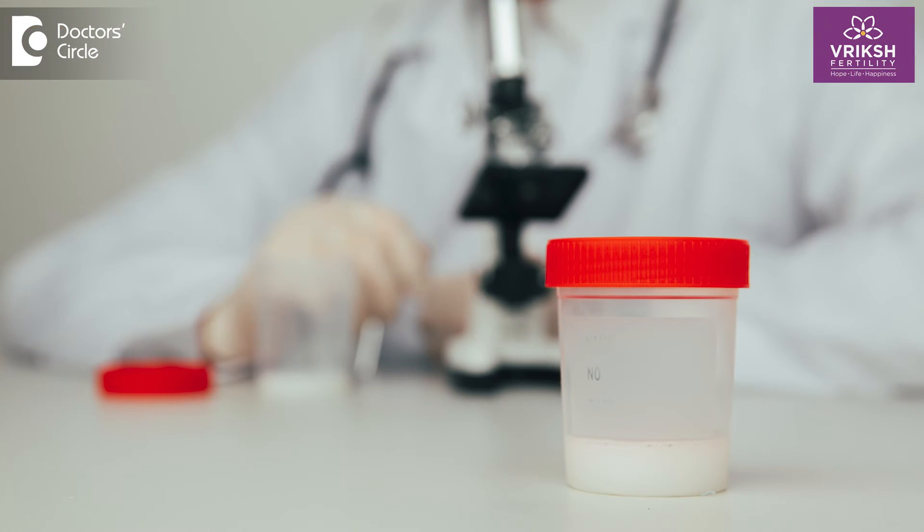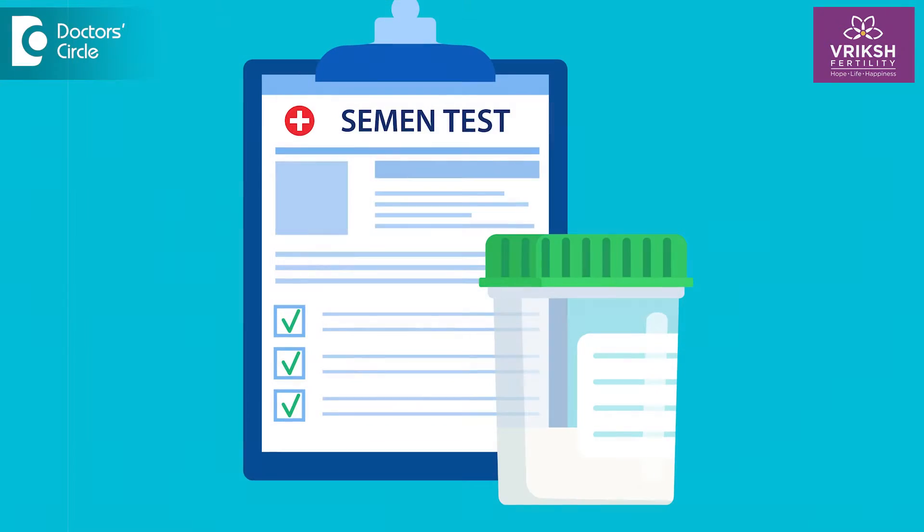We usually ask them to come with three to five days of abstinence — that is, they should not masturbate nor have sexual intercourse for at least three days and a maximum of five days. Within this three to five day gap, they come and give their semen sample, which is collected at the fertility center and examined by an andrologist. A detailed report is then prepared, covering four important points.